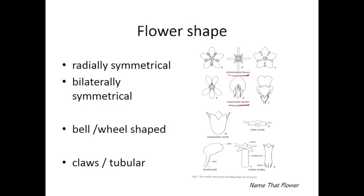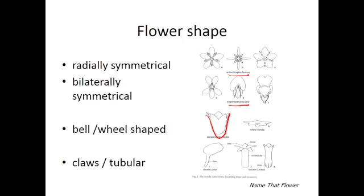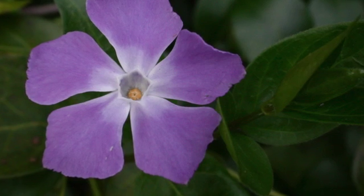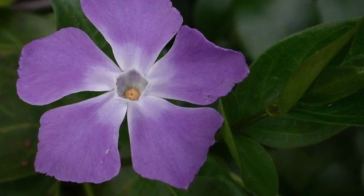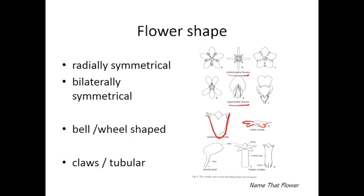But there are many other descriptors. The corolla may be bell-shaped, as in this Campanula flower, or it might be wheel-shaped, as in this rotate corolla. The petals might also have claws, or as we said before, be fused into tubular shapes.